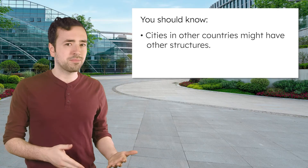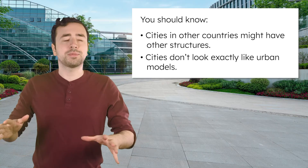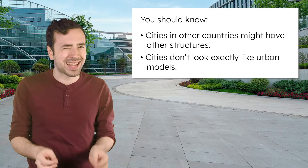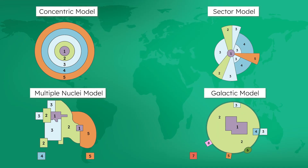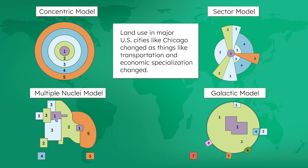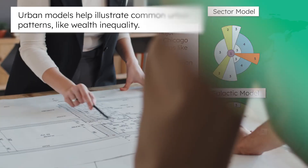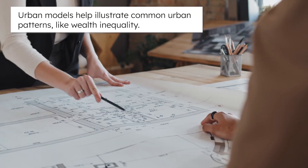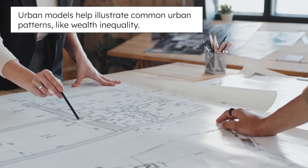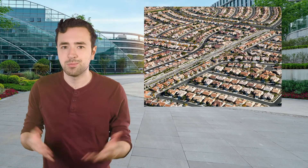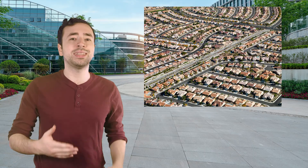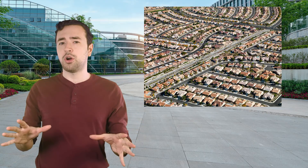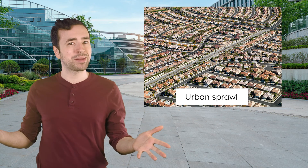Thanks for joining me today, Explorers. You should know that since these urban models were developed in the U.S., cities in other countries might have other structures. And since they're models, no real-life city looks exactly like them. Still, the concentric, sector, multiple nuclei, and galactic city models help explain how land use in major U.S. cities like Chicago changed as transportation and economic specialization changed. Urban models also illustrate common urban patterns like wealth inequality — a part of city life that urban planners like you work to improve. In our next lesson, we'll explore what happens when cities keep expanding outward like in the Galactic Model: a phenomenon called urban sprawl. Until then, keep exploring!